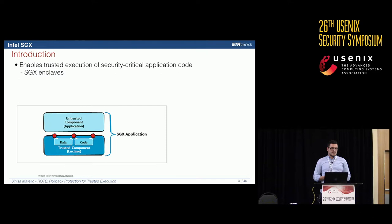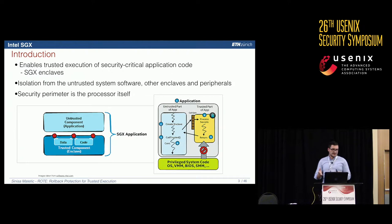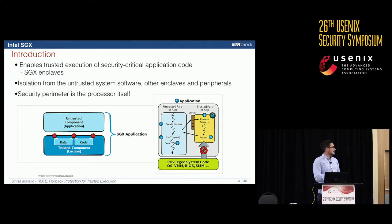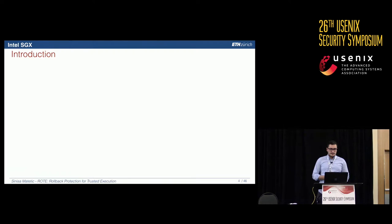The point of Intel SGX is that you can have an isolated execution of some code where you can run security-critical operations. An SGX application consists of an untrusted application — like a normal application — and a trusted component, the enclave, which runs in isolation. The untrusted part does something, the enclave is created, the isolated execution finishes, returns some value, and continues.